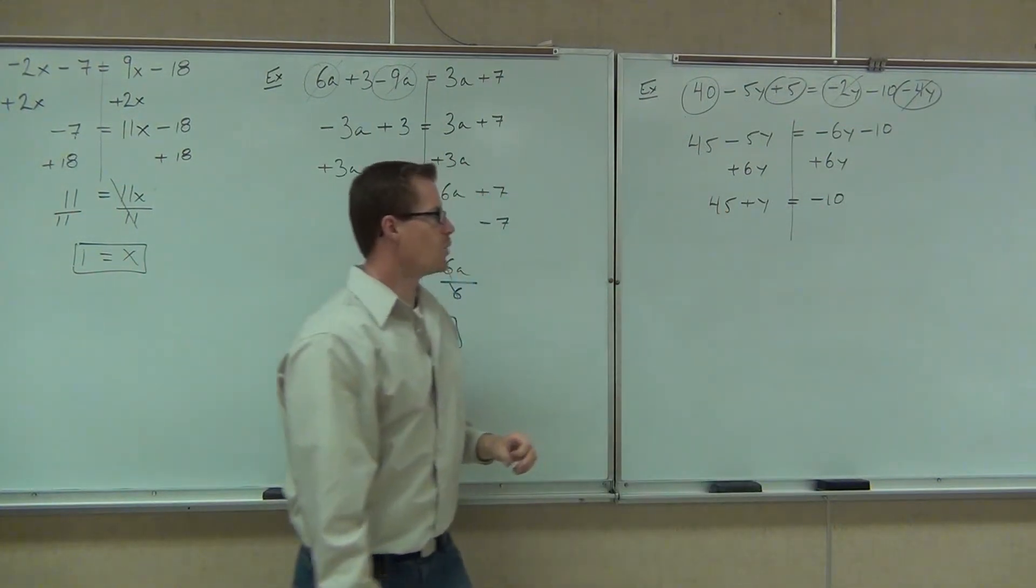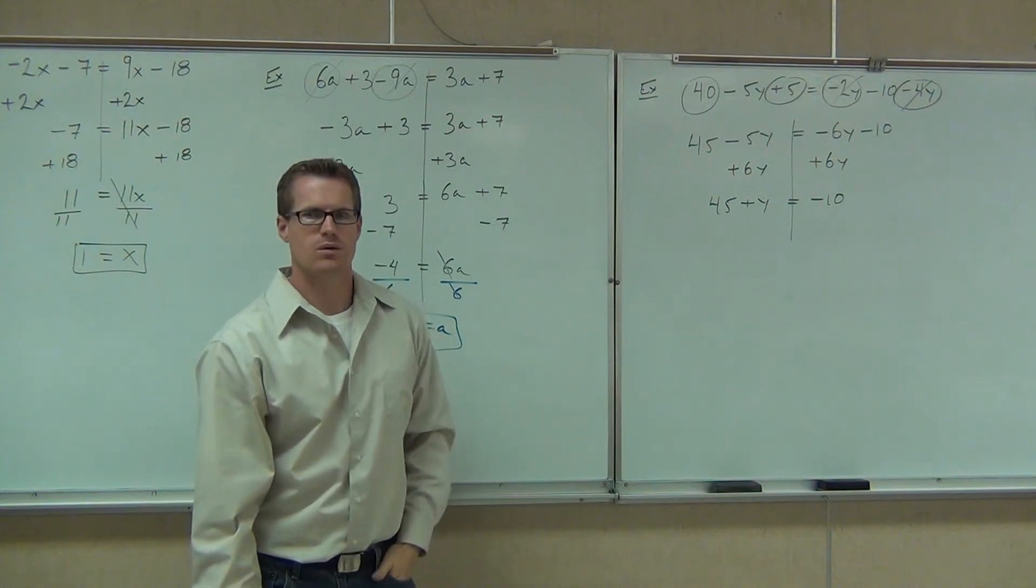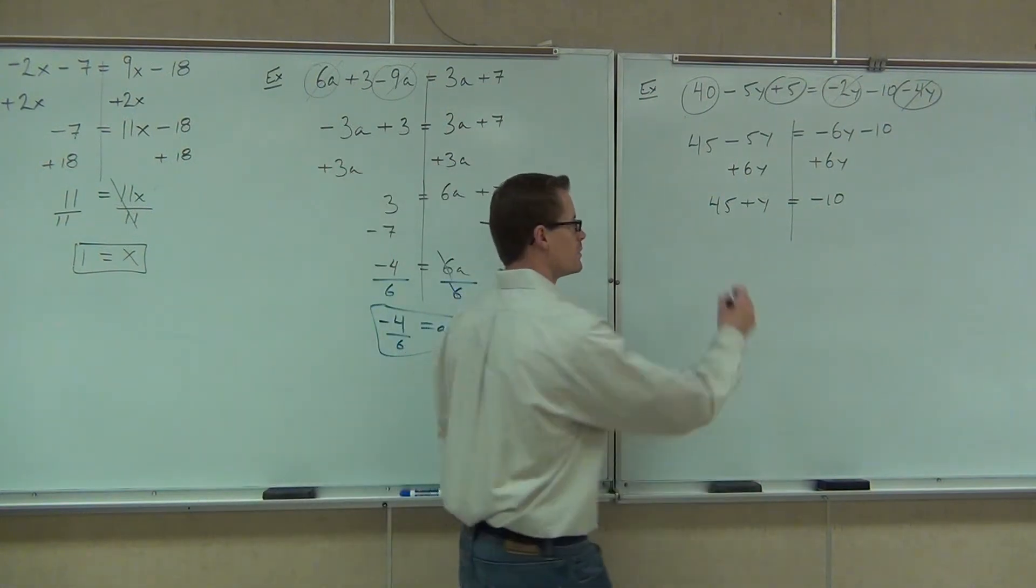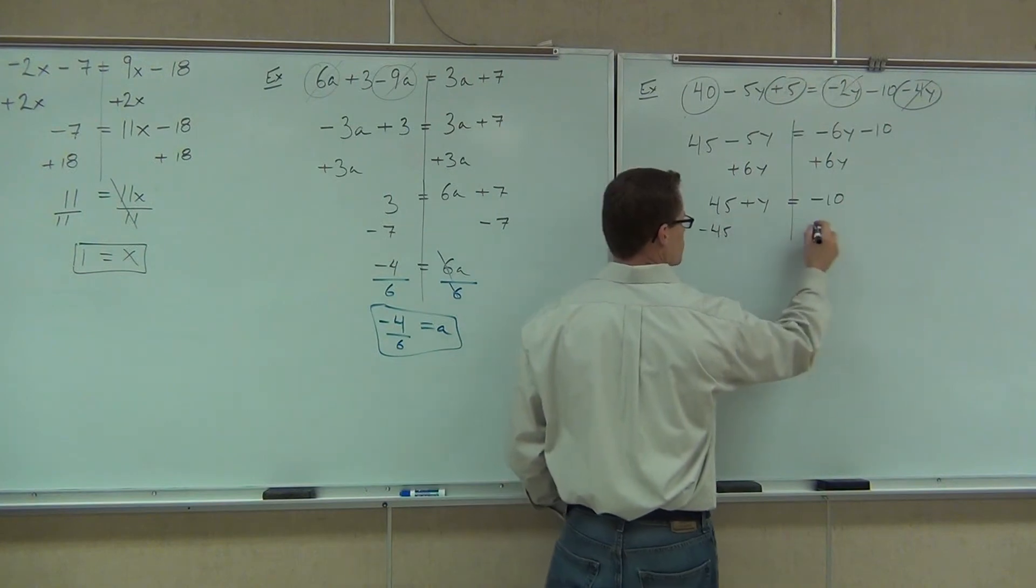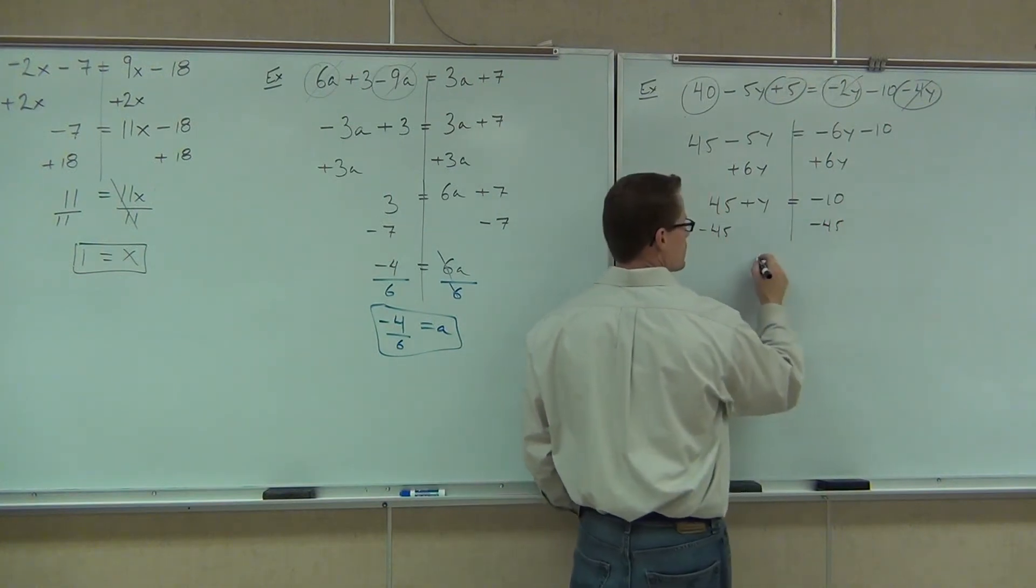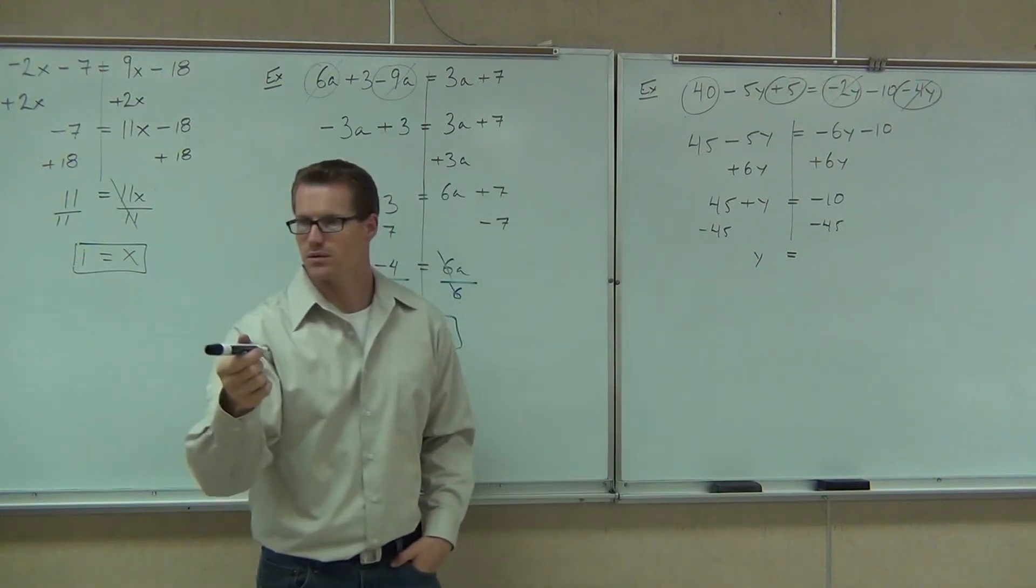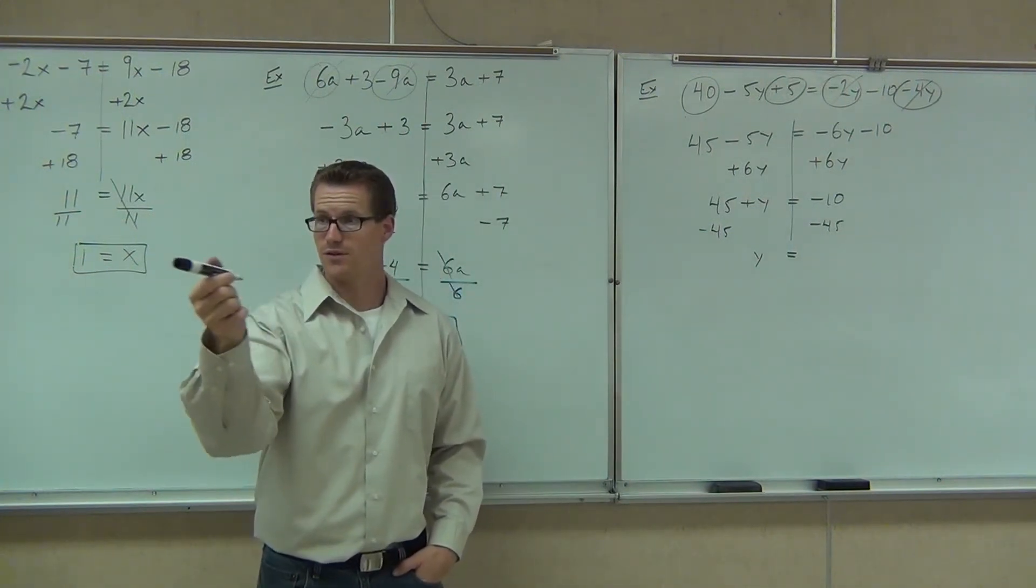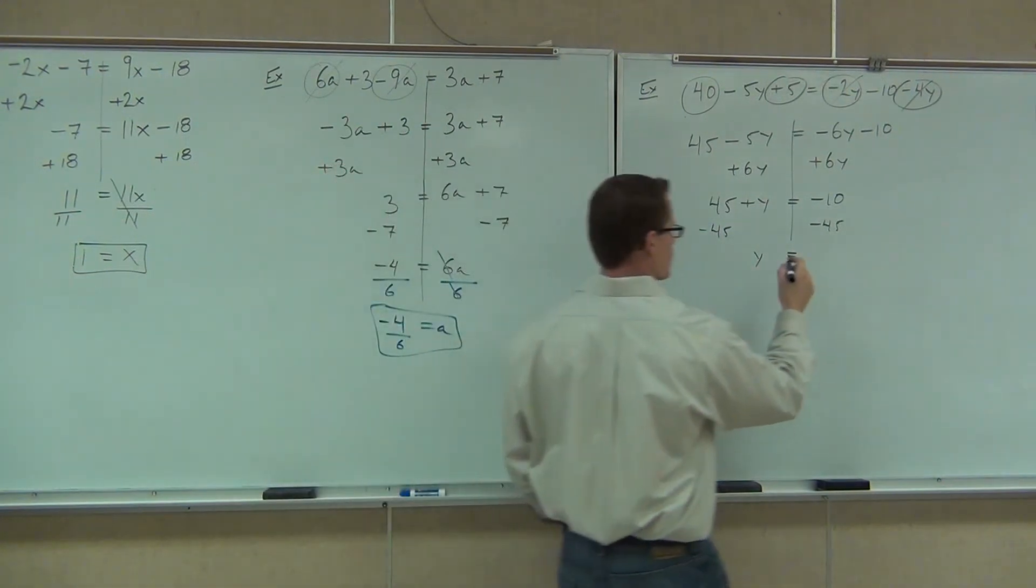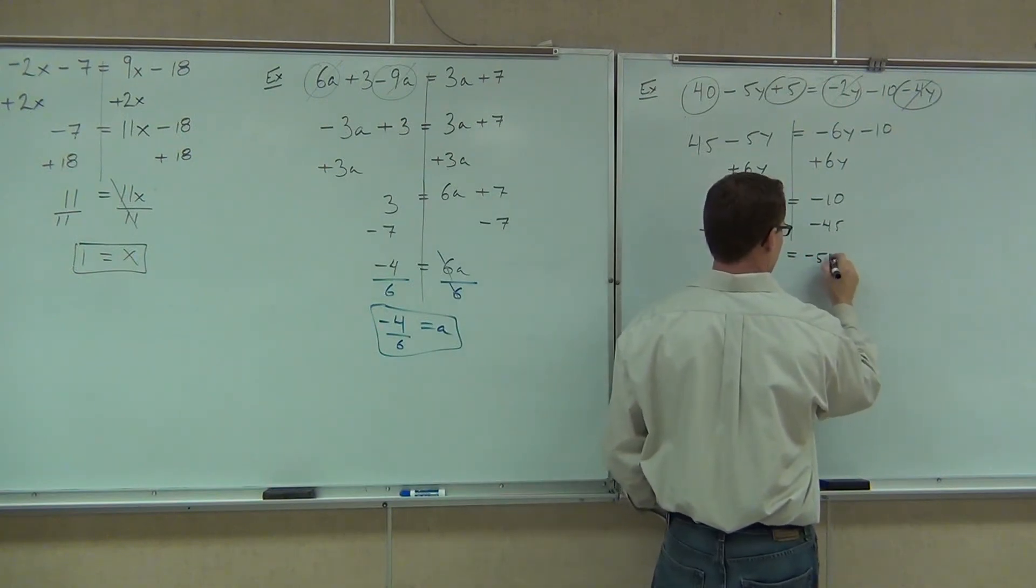Hey, tell me something. What number do we have to get rid of now? 45. How? Subtract it. So if we subtract 45, I know on the left I get y, on the right I get negative 55. Is that what you got? Negative 55? Yep. That is it.